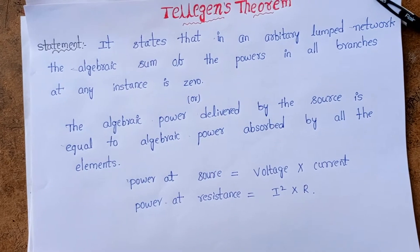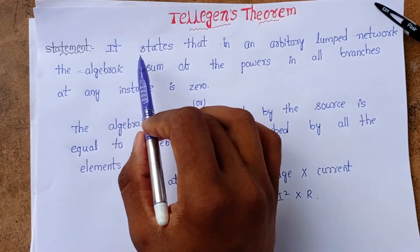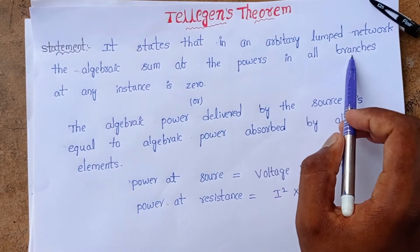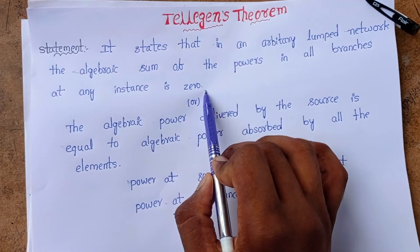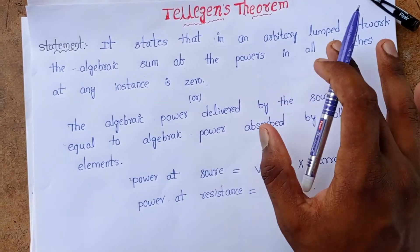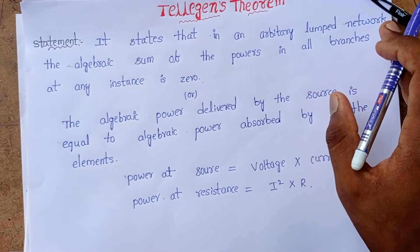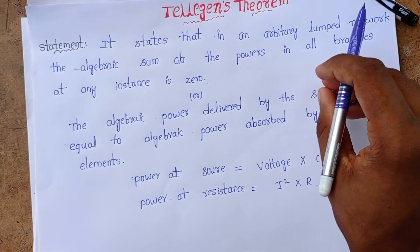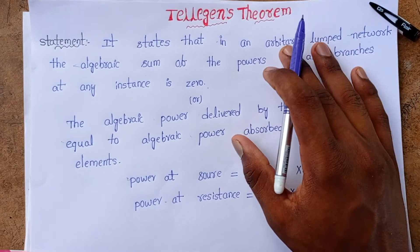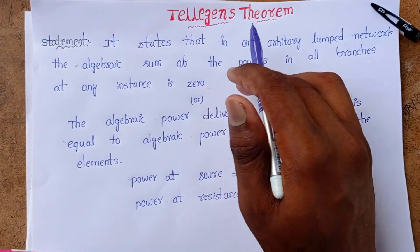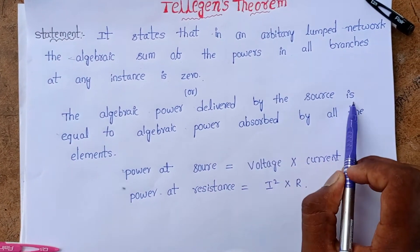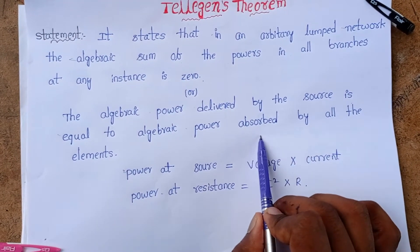Now let's see the statement of Tellegen's theorem. It states that in any arbitrary lumped network, the algebraic sum of the powers in all branches at any instant is zero. In other words, the algebraic power delivered by the source is equal to the algebraic power absorbed by the elements.